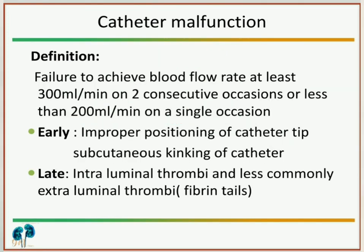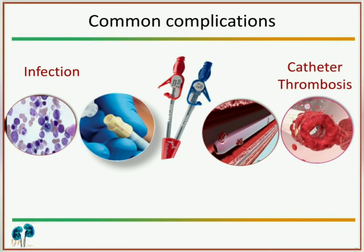Catheter malfunction is defined as failure to achieve a blood flow rate of at least 300 ml per minute on two consecutive occasions, or less than 200 ml per minute on a single occasion. Early malfunction may be due to improper positioning of the catheter tip or subcutaneous kinking. Late malfunction is typically caused by intraluminal thrombus and less commonly extraluminal thrombus.